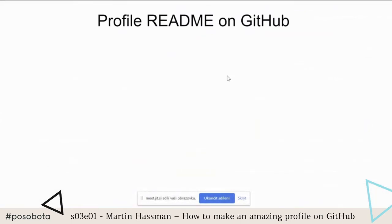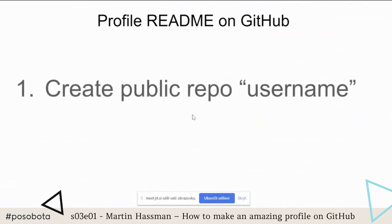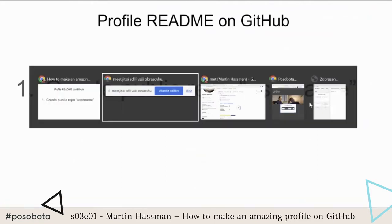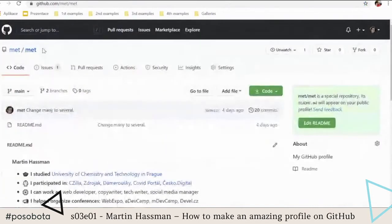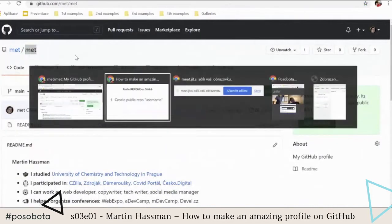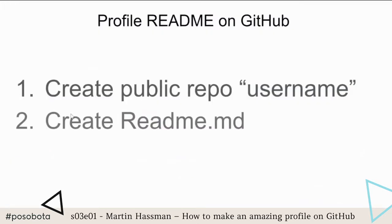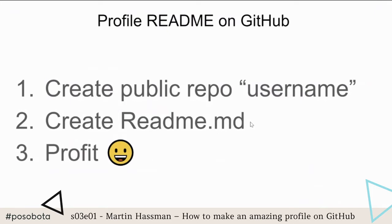So how is this feature called? It's the Profile README on GitHub. How do you create one? You create a repository with the same name as your username. Second step: create a README file. That's it — profit. There is nothing more, no more magic.